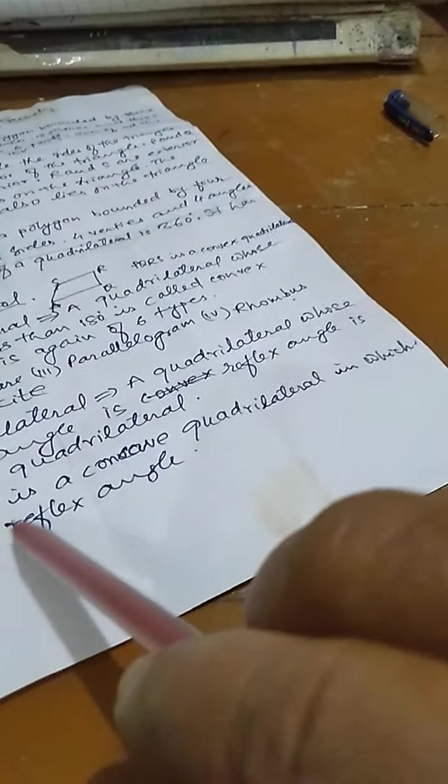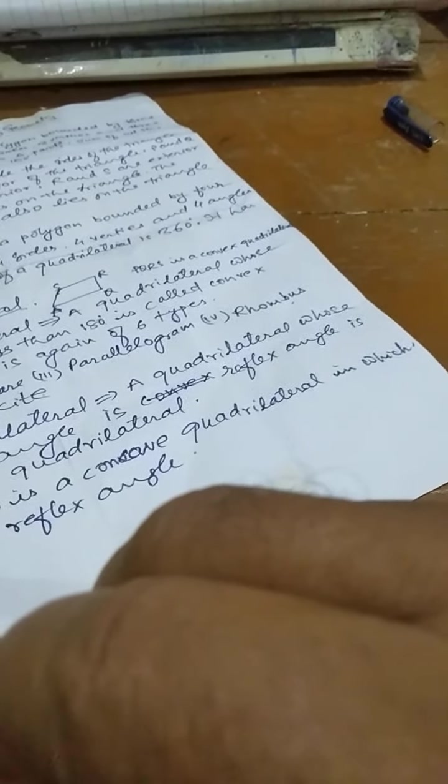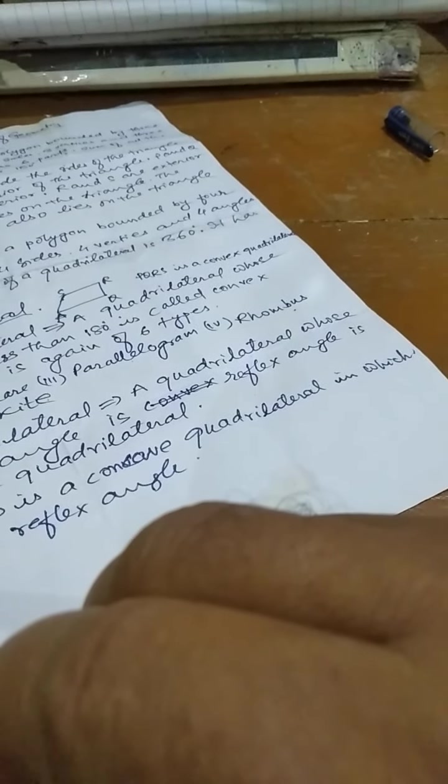Now, concave quadrilateral, a quadrilateral whose one angle is reflex angle is called concave quadrilateral. ABCD is a concave quadrilateral in which D is reflex angle. So, one angle is more than 180 degree. Hence, it is a concave quadrilateral.